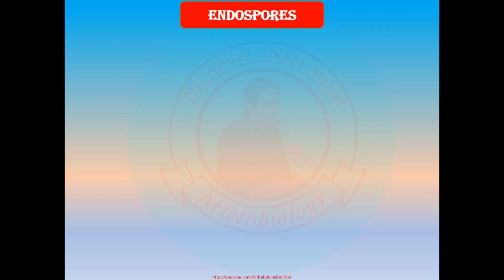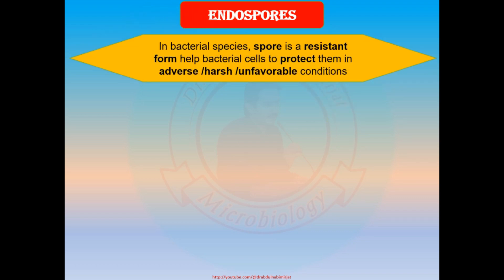What are endospores, and why do bacteria need to form them? In bacterial species, a spore is a resistant form that helps bacterial cells to protect themselves in adverse, harsh, or unfavorable conditions. Bacteria do not produce endospores in normal conditions; however, they form endospores only when there is a limitation of nutrients or extreme environmental conditions such as temperature, pH, and other unfavorable conditions.